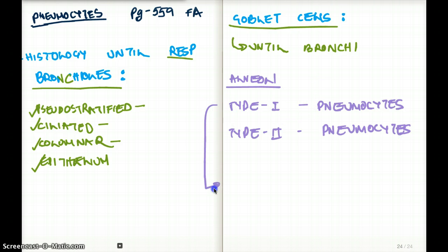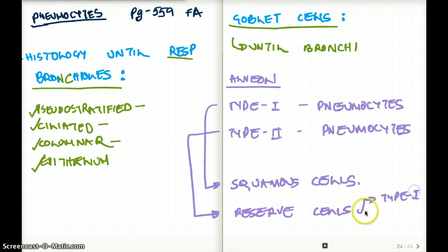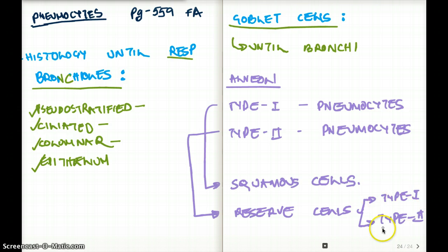Type 1 pneumocytes are squamous in nature — these are squamous cells. Type 2 pneumocytes are the reserve cells. These cells have the ability to become type 1 or type 2 when there is cellular or lung damage. During lung damage, the type 2 pneumocytes are a lot more active and can turn itself into type 1 or type 2 pneumocytes. Type 1 pneumocytes make 97% of the alveolar wall, while type 2 pneumocytes make only 3% of the alveolar wall.